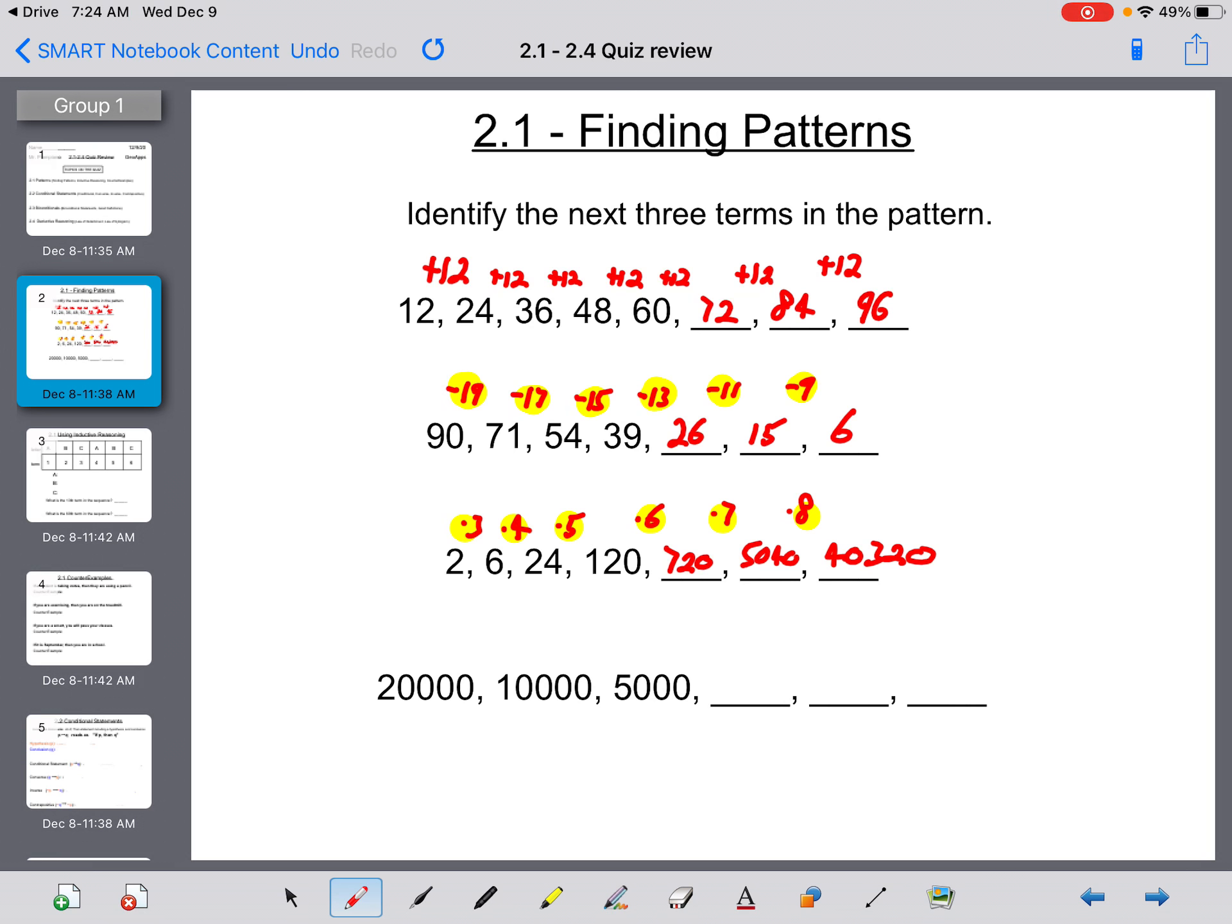If we take a look here, we have 20,000 going down to 10,000, 10,000 going down to 5,000. So that's division by 2 each time. So what is 5,000 divided by 2? It's 2,500. 2,500 divided by 2 is 1,250, and 1,250 divided by 2 gives you 625.